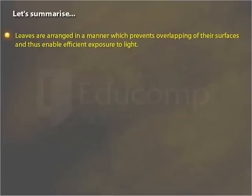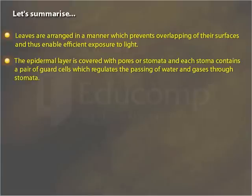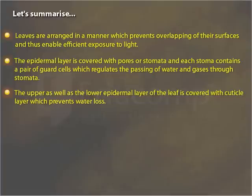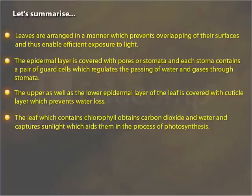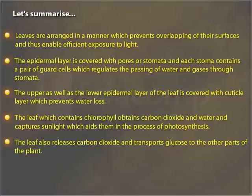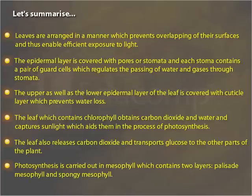Let's summarize. Leaves are arranged in a manner which prevents overlapping of their surfaces and thus enables efficient exposure to light. The epidermal layer is covered with pores or stomata, and each stoma contains a pair of guard cells which regulates the passing of water and gases. The upper as well as the lower epidermal layer is covered with a cuticle layer which prevents water loss. The leaf obtains carbon dioxide and water and captures sunlight, which aids photosynthesis. The leaf also releases carbon dioxide and transports glucose to other parts of the plant.